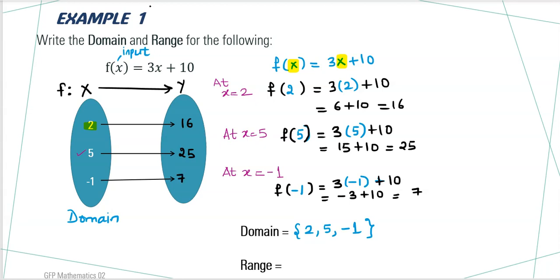Minus 1 is mapped to the number 7. The second set gives you the range. Elements which map to 2, 5 and minus 1. In this case, the range becomes 16, 25 and 7.